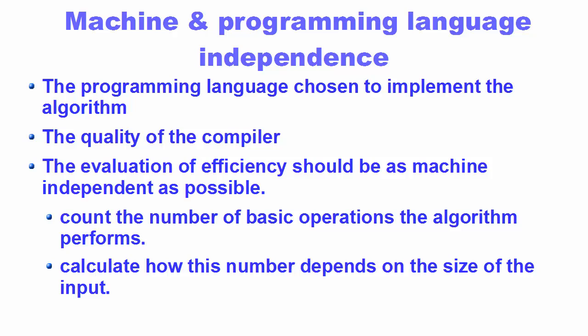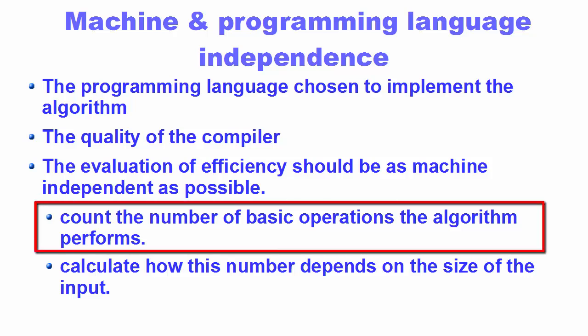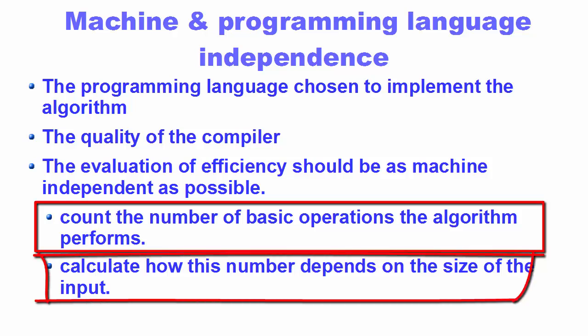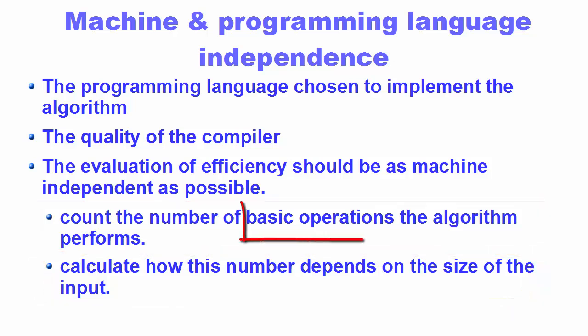The evaluation of efficiency should be as machine-independent as possible. It's not useful to measure how fast an algorithm runs if it depends on which particular computer, operating system, programming language, compiler, or kind of inputs are used for testing. Instead, to evaluate the efficiency of an algorithm, we count the number of basic operations the algorithm performs and calculate how this number depends on the size of the input.